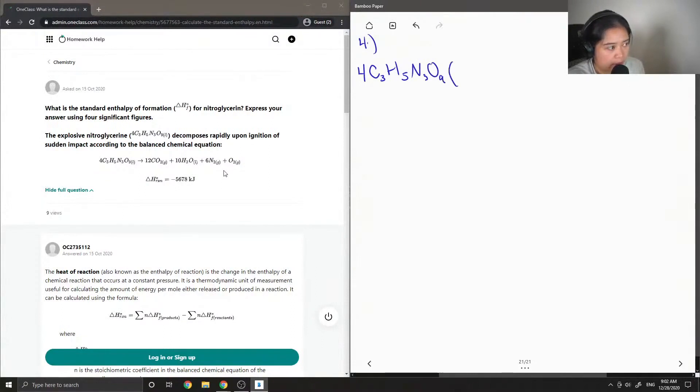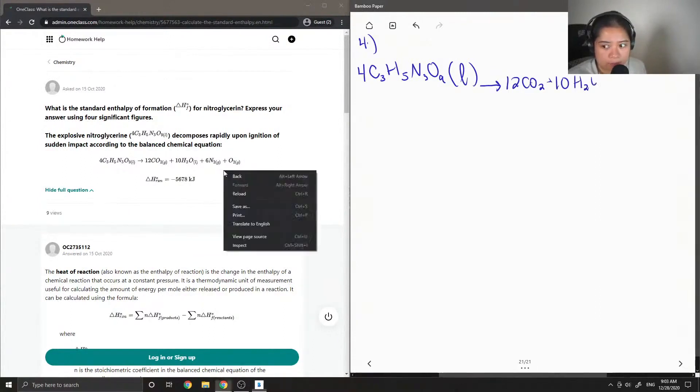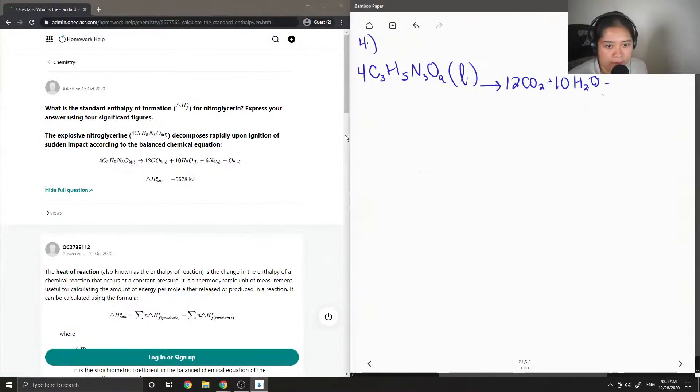So this is the structure, the chemical formula of nitroglycerin: 4C3H5N3O9, and then it decomposes to form carbon dioxide, water, nitrogen, and oxygen.